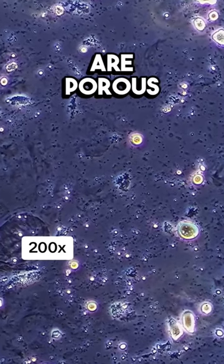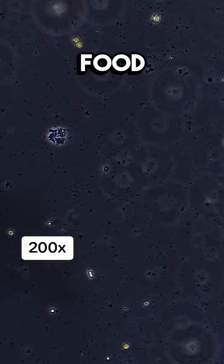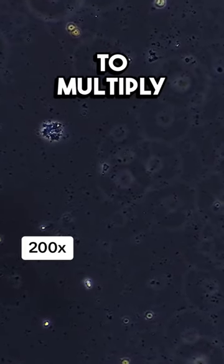Sponges are porous, moist, and filled with food, which makes an excellent environment for bacteria to multiply.